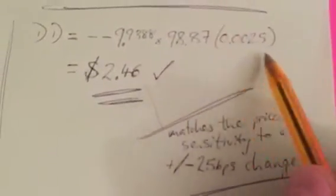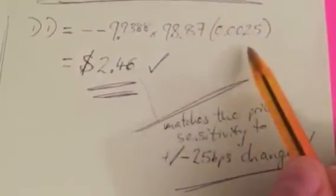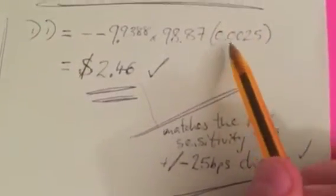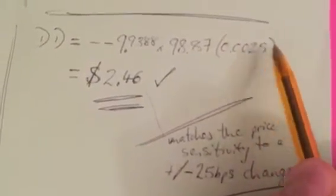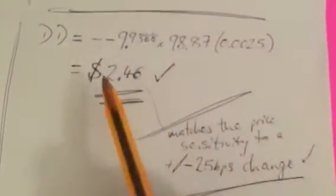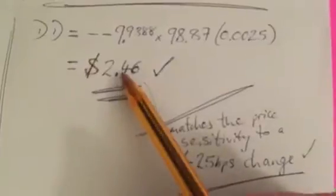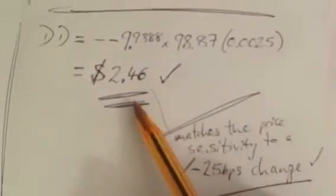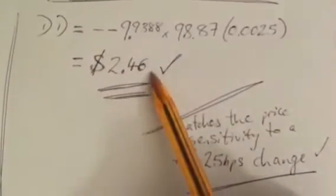and we're going to multiply that by the yield change that we're measuring in decimals, which is 0.0025, or 25 basis points. And the result of this is a change plus or minus $2.46.